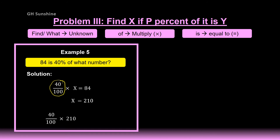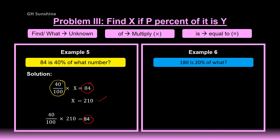Let's check the answer — substituting X equals 210 gives 84, so X equals 210 is correct. Now another example — Example 6: 180 is 20% of what? 'Of what' means the unknown, multiply; '180 is' represents equal to 180. The final answer is X equals 900.